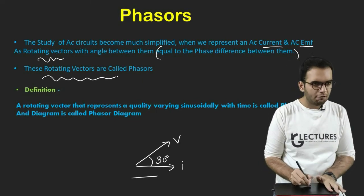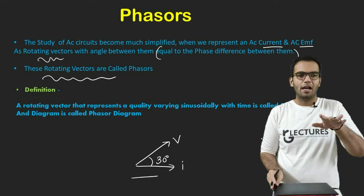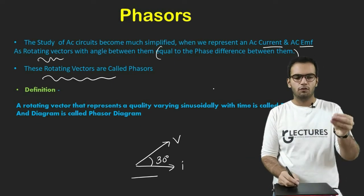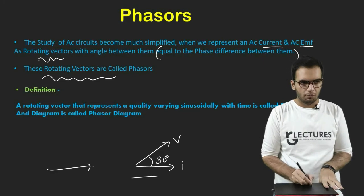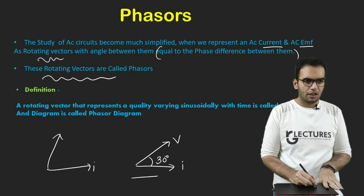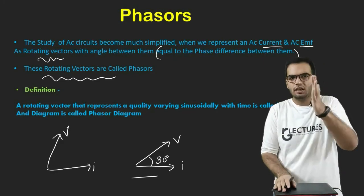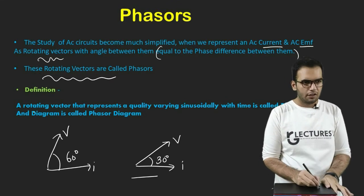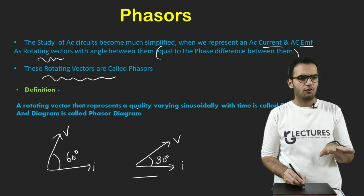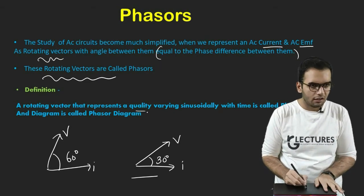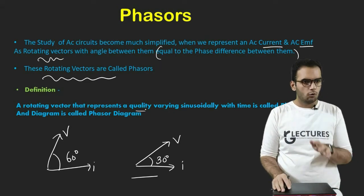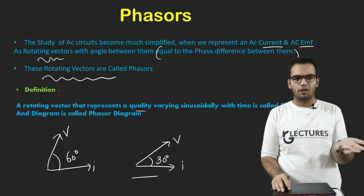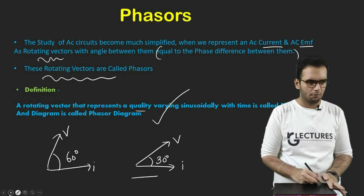These rotating vectors are called Phasors. Why rotating vectors? Suppose at some time instant the difference increases to 60 degrees — so V is a rotating vector, and now this difference is 60 degrees. So the definition: a rotating vector that represents a quantity varying sinusoidally with time is called a Phasor, and the diagram is called a Phasor Diagram.